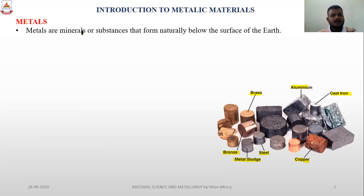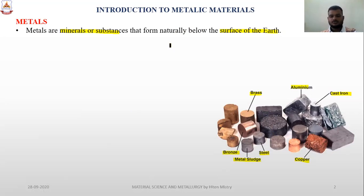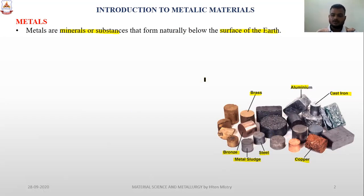Metals are minerals or substances that form naturally below the surface of the earth's crust. In their initial state they are found in raw form, and after various processes — heat treatment, addition of alloys — we obtain the various combinations of metallic properties used in day-to-day life.